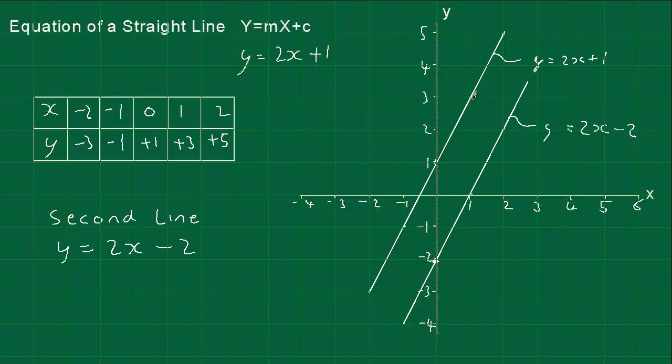And the first thing we can see is these two lines are parallel. Because they have the same gradient, in this case 2, they're going to be parallel lines. So that's one question you might get asked, is draw a parallel line to another line. And all you have to do is change the intercept value to anything really. As long as you keep the gradient the same, as 2, then these lines will be parallel.